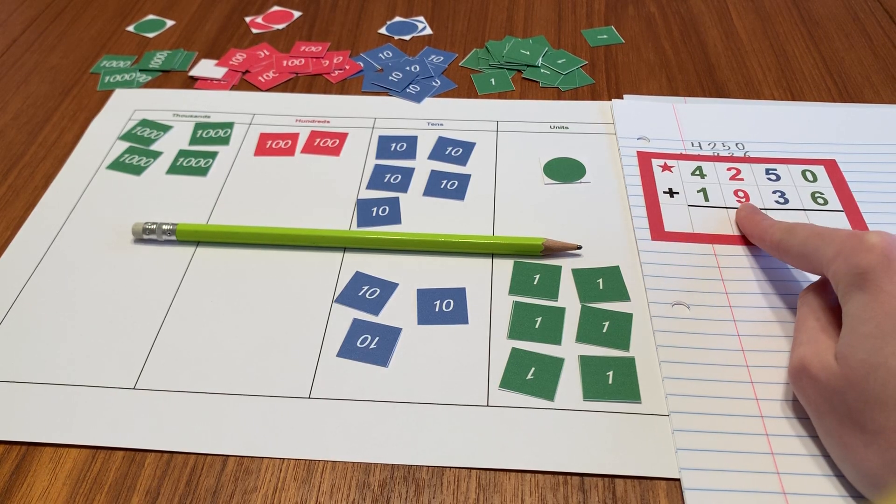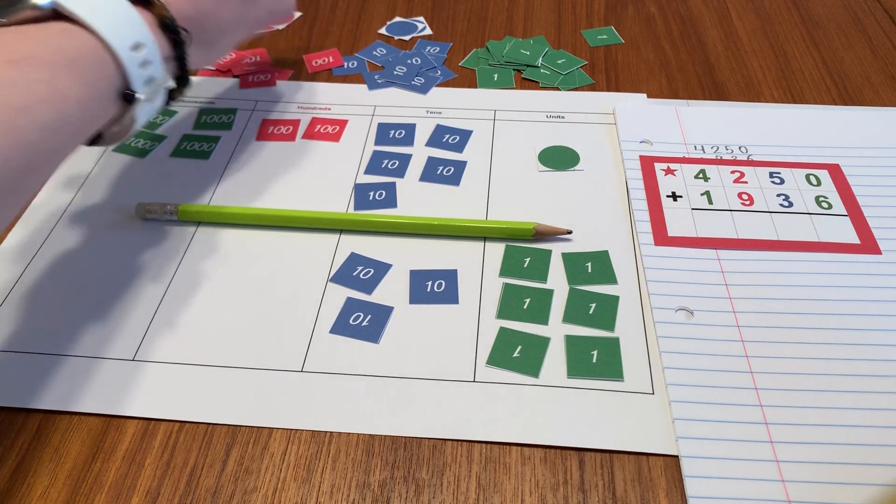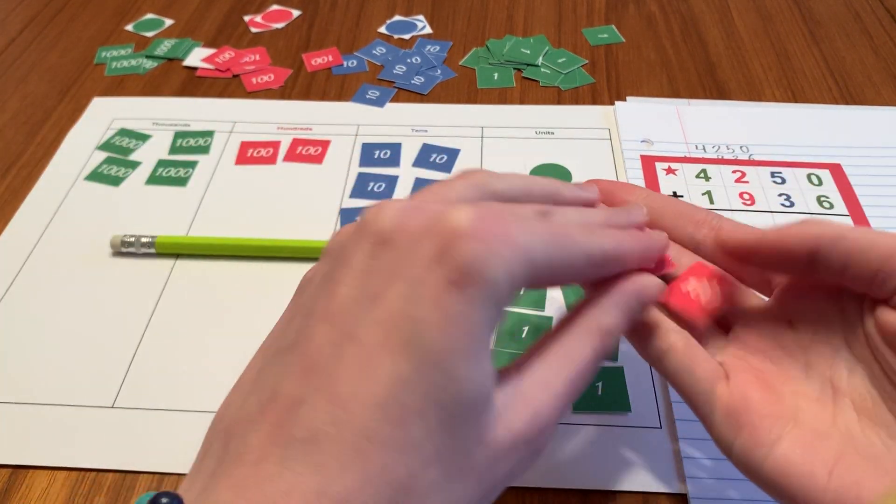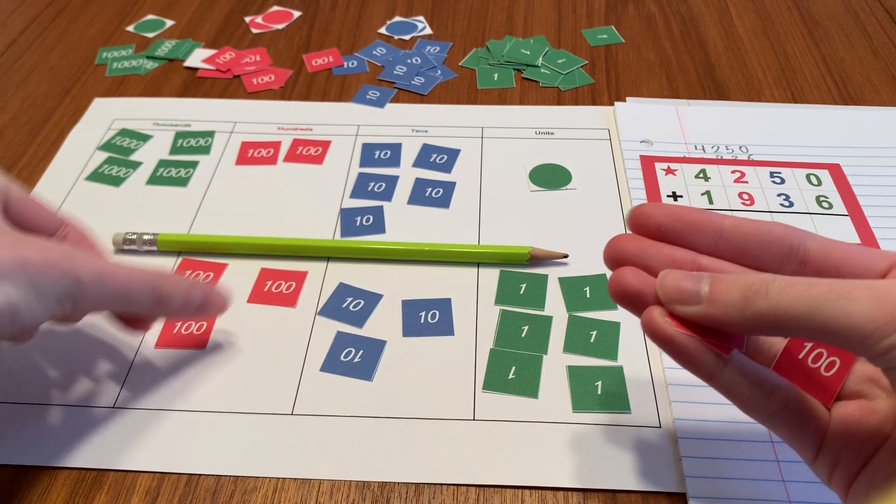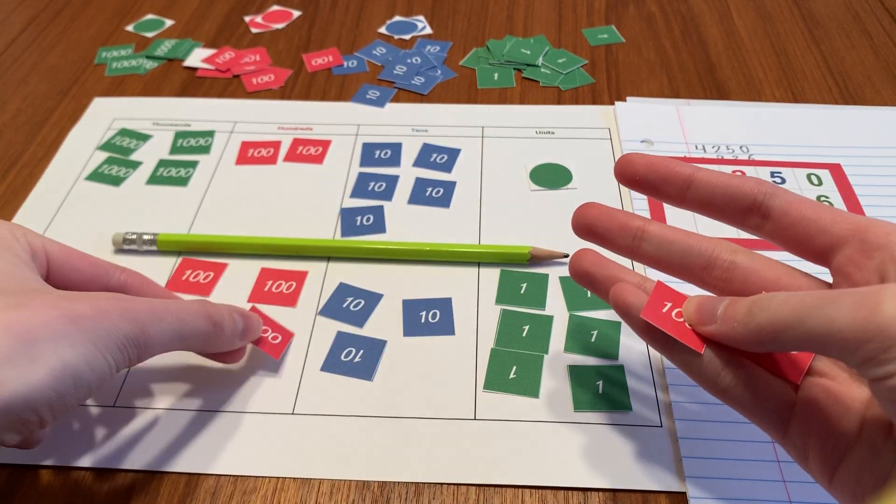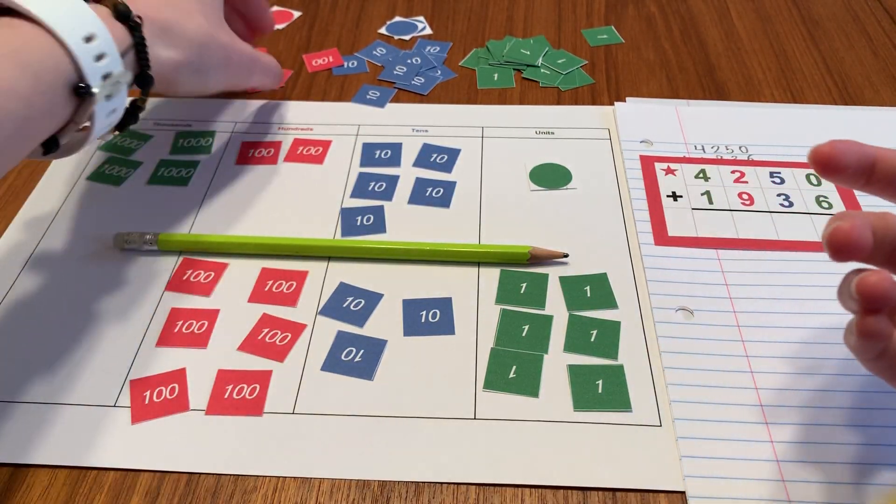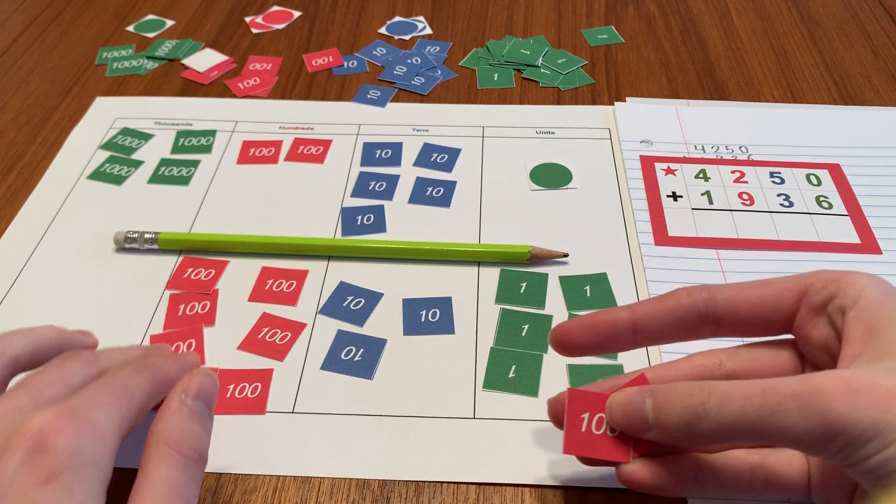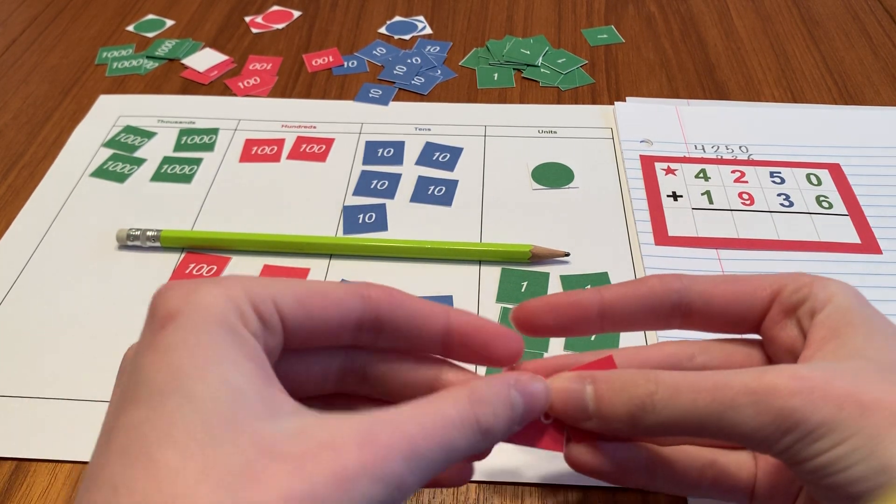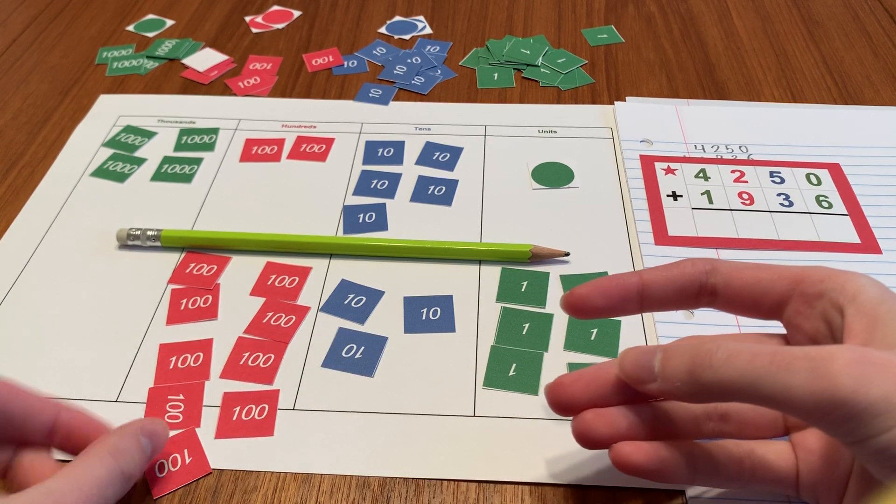In my hundreds place, I have nine hundreds. One hundred, two hundred, three hundred, four hundred, five hundred, six hundred. I need three more hundreds. Eight hundred, nine hundred.